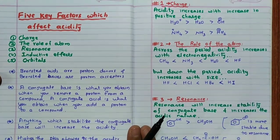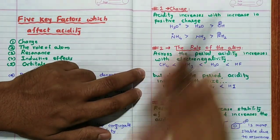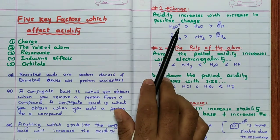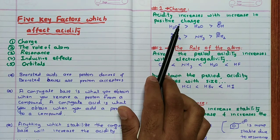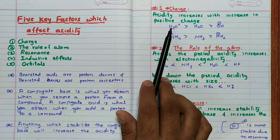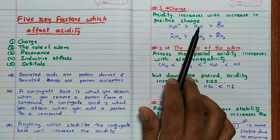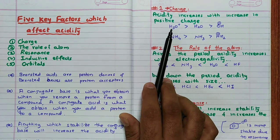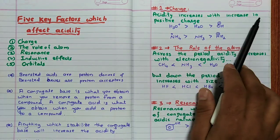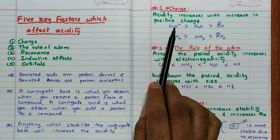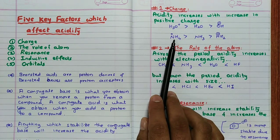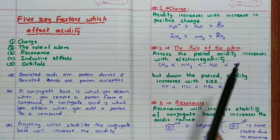Quickly we will go to the first point, that is charge. Acidity increases with increase in positive charge — very, very important. Whenever a molecule has a positive charge, it is proton-rich. For example, neutral H₂O becomes H₃O⁺ when a proton is added, and that proton can be given away very easily to become neutral. Hence, H₃O⁺ is more acidic than H₂O, which is more acidic than OH⁻. Similarly, NH₄⁺ is more acidic than NH₃, which is more acidic than NH₂⁻.